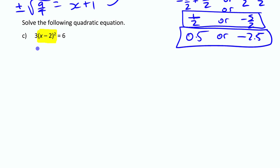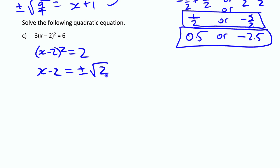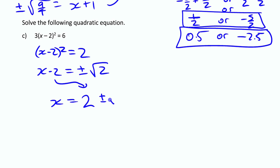Dividing both sides by 3 gives x² = 2. Applying the square root principle: if something squared is 2, then that something is ± √2. This isn't one that simplifies to a nice number like the previous examples, so we leave it as the exact answer. Then moving the -2 over: x = 2 ± √2.